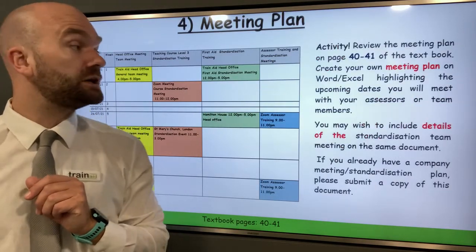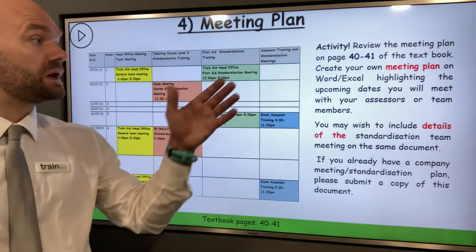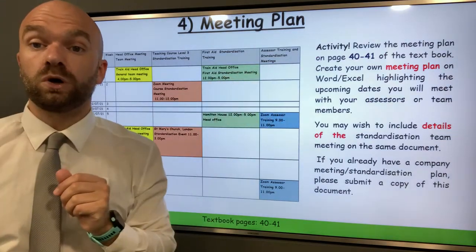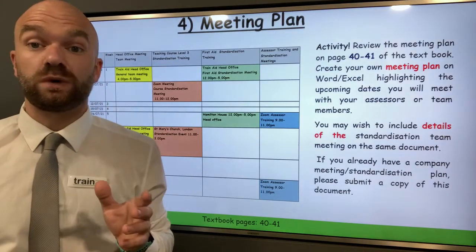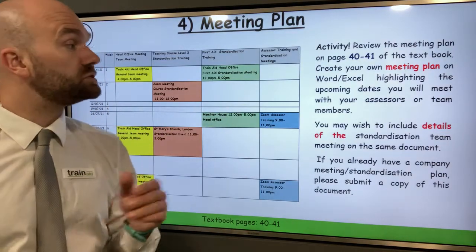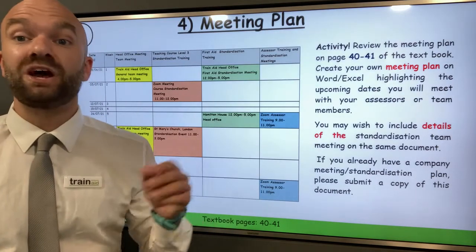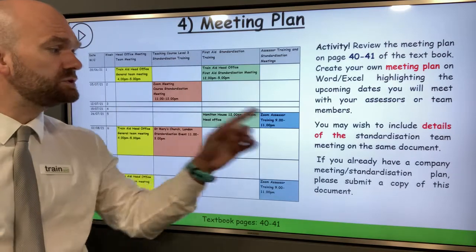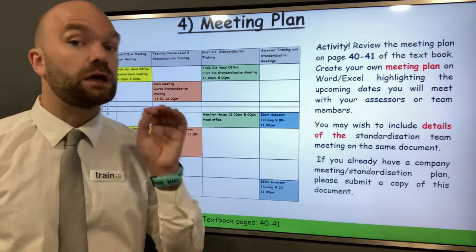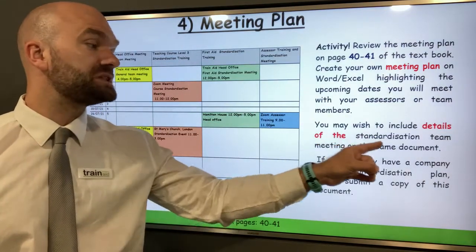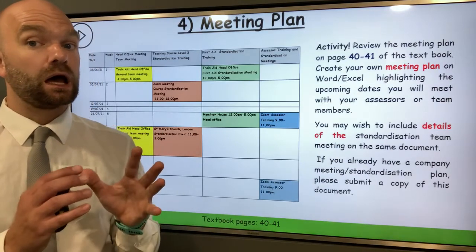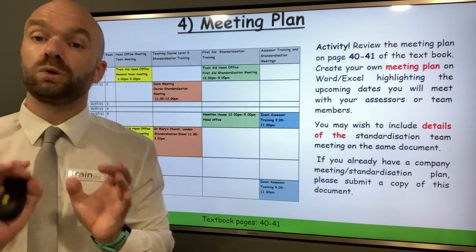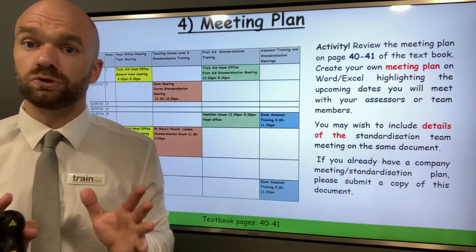For your IQA portfolio, you can create your own meeting plan on perhaps Word or an Excel spreadsheet. You can use the TrainAid templates as a guide when completing your meeting plan — that's absolutely fine. Also, very importantly, if you wish to put your standardisation meeting events on the same spreadsheet, that will also meet criteria five, which I'll come on to shortly.